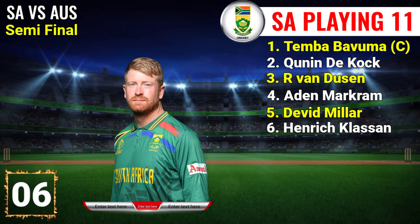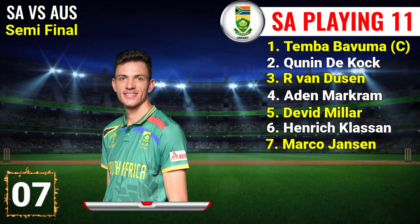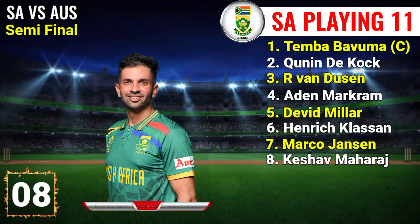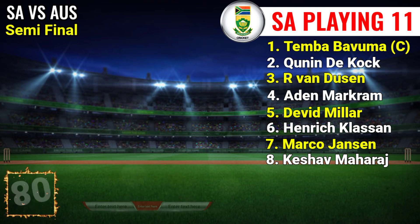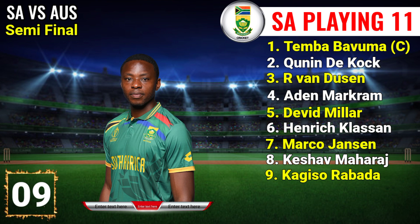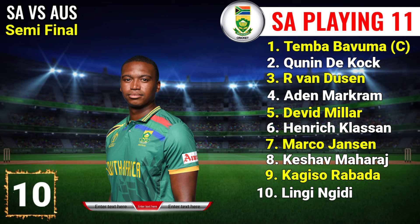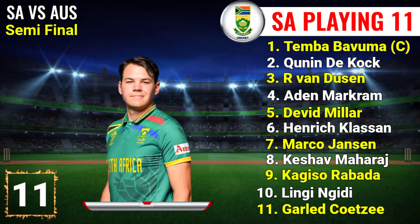Number 6: Heinrich Klaasen, right-hand batsman. Number 7: Marco Jansen, left-arm all-rounder. Number 8: Keshav Maharaj, right-hand all-rounder. Number 9: Kagiso Rabada, right-hand fast bowler. Number 10: Lungi Ngidi, right-hand fast bowler. Number 11: Gerald Coetzee, right-hand fast bowler.